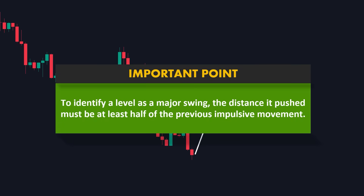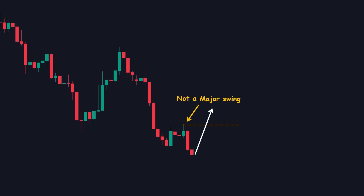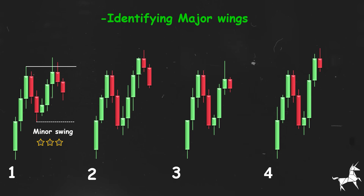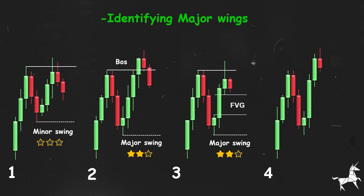To identify a level as a major swing, the distance it pushed must be at least half of the previous impulsive movement. This is our third and final criterion for identifying major swing points. In the first example, none of the criteria are met, so it is considered a minor swing point. In the second example, we have a break of structure and a significant distance pushed by the price, but there is no imbalance; therefore, this is considered a major swing with two out of three criteria met. Here we have imbalance and a significant distance, but no valid break of structure, so this is also a major swing point with two stars. In the final example, this swing has created imbalance, broken structure, and shown proper distance; therefore, it is a major swing point with three stars.